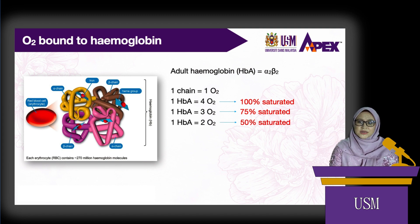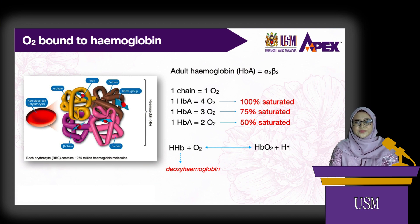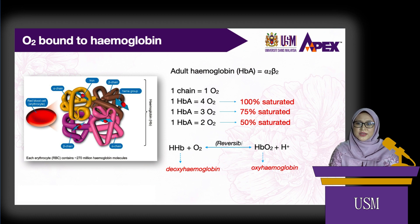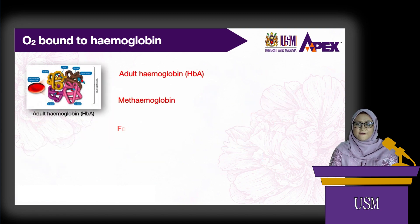When hemoglobin is deoxygenated, or does not have any oxygen molecules bound, it is called deoxyhemoglobin. When hemoglobin is oxygenated, it is called oxyhemoglobin. This loading and unloading of oxygen to hemoglobin is a reversible process. There are other types of hemoglobin such as methemoglobin, fetal hemoglobin, and hemoglobin S.